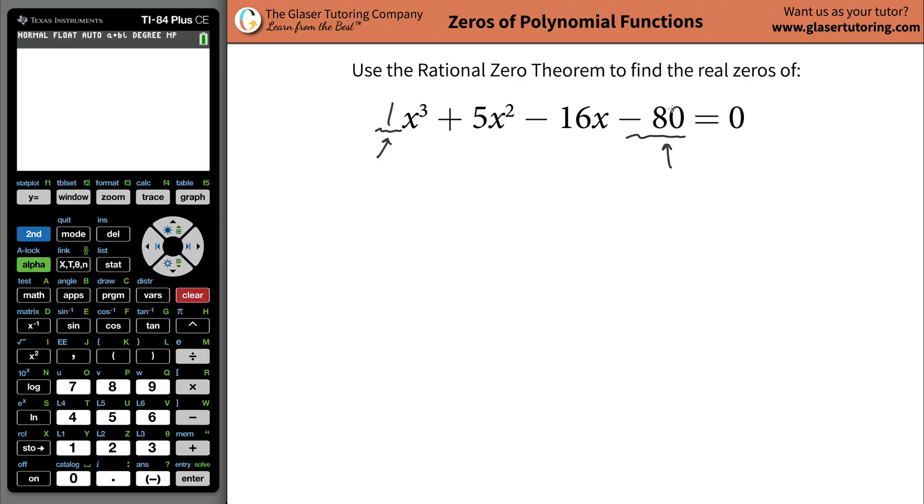So let's label the factors of the constant term P, and let's label the factors of the leading coefficient a Q. So basically what we're doing is we're going to find the factors of the constant term P. We're going to divide it then by the factors of the leading coefficient, we call that Q.